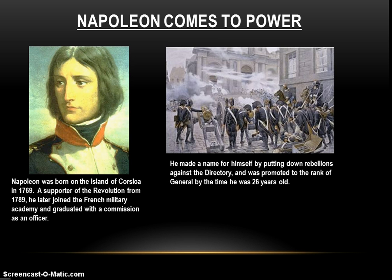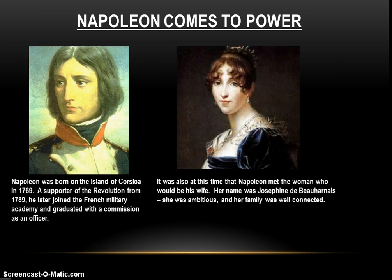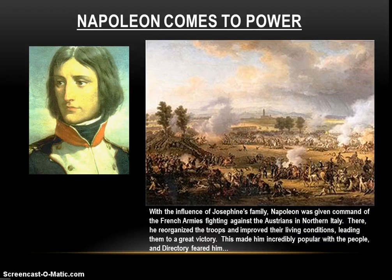A young Napoleon made himself very well known through his brilliant command of strategy, his discipline, and his ability to lead men in battle. He made a name for himself putting down rebellions against the Directory, leading to his promotion to the rank of general by age 26 — an incredible feat. It was also around this time that he met his wife, Josephine de Beauharnais — beautiful, ambitious, and very well connected. Napoleon used his wife's family connections to gain his first big command, leading French armies against the Austrians in northern Italy.